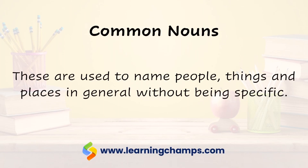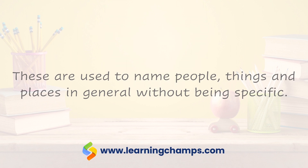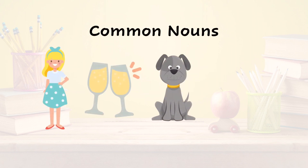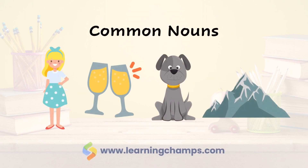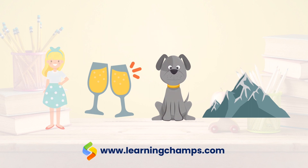Common nouns are used to name people, things and places in general without being specific. Examples: Girl, Boy, School, Food, Drink, Country, Shoes, Dog and Mountain.